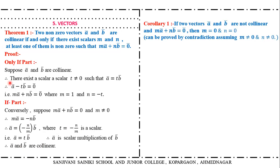So this is the theorem. Now corollary one: if two vectors A bar and B bar are not collinear and M·A bar plus N·B bar equals zero bar, then M is equal to zero and N is equal to zero. We can prove this by contradiction.